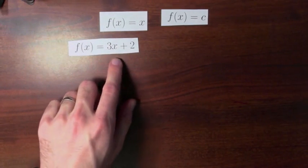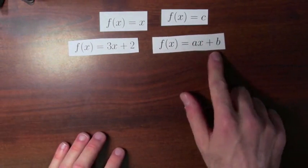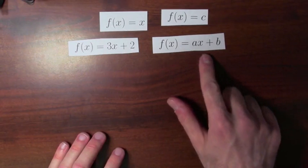Here's a function, f of x equals 3x plus 2. And if you're thinking about stuff like that, why not stuff like this? Pick two numbers, a and b, and then you can define a function like this, f of x equals ax plus b.